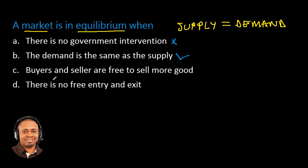Let's check the other options. Option C: buyers and sellers are free to sell more goods. No. Option D: there is no free entry and exit. No. So answer option B is the right answer because it gives the exact definition of market equilibrium.